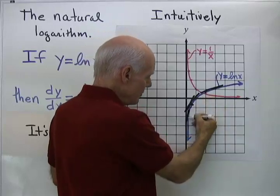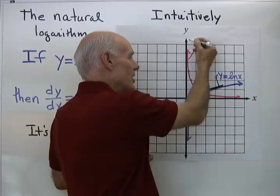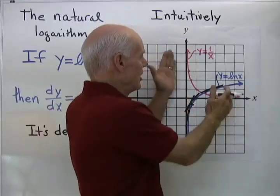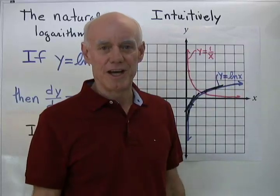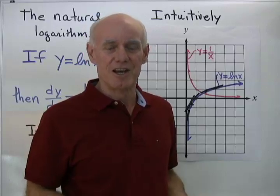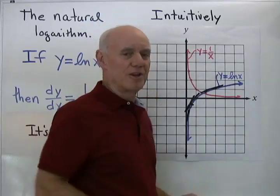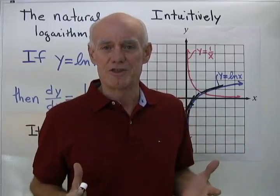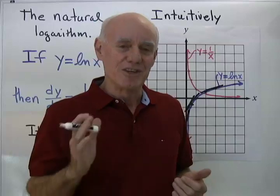When I go toward smaller x on the blue graph, the slopes get larger and larger, and sure enough the red graph goes up. So intuitively, just from looking at the graphs of y = ln(x) and y = 1/x, it looks like the derivative of y = ln(x) is y′ = 1/x. If that's good enough for you, you can stop here and just accept that derivative is correct.